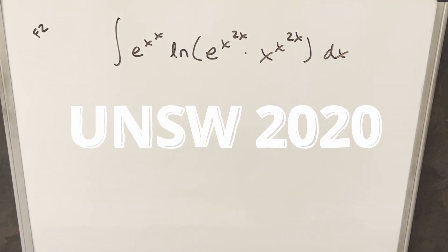Okay, we've retained our integral from the UNSW integration B 2020, finals number 2. We have the integral of e to the x to the x times natural log e to the x to the 2x times x to the x to the 2x dx.